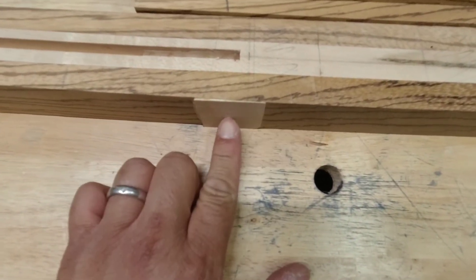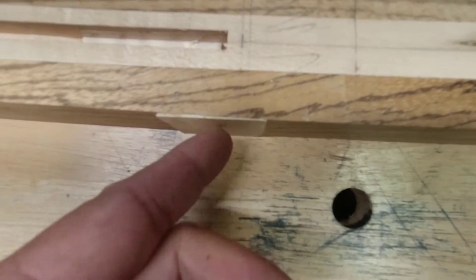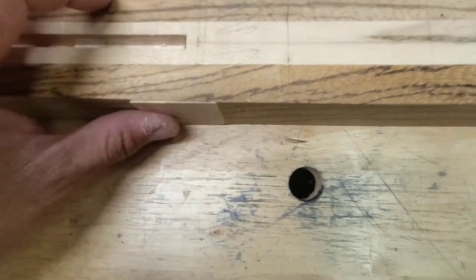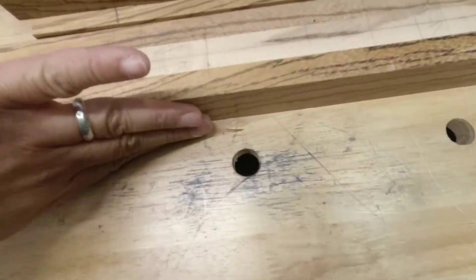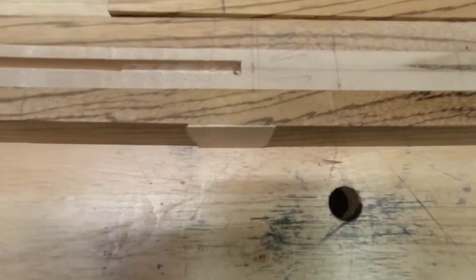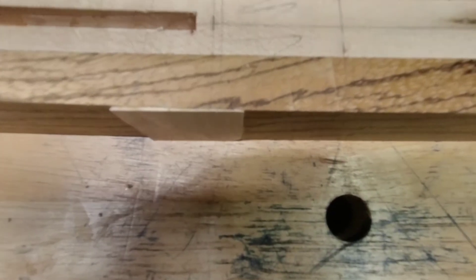So this is that little wedge I was talking about after I routed it. I'm going to take it down a little bit more with some sandpaper, so it'll just make a nice flush appearance and a much better fit.